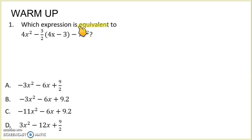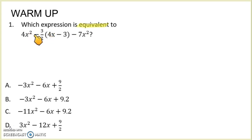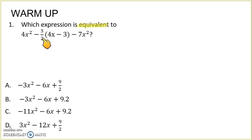Hopefully you remember equivalent — it just means one of these is the same as this once it's been simplified. So we need to take care of the parentheses by distributing the negative 3 halves and then combine all our like terms.